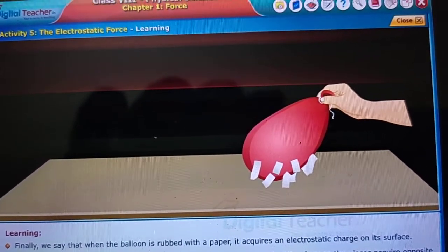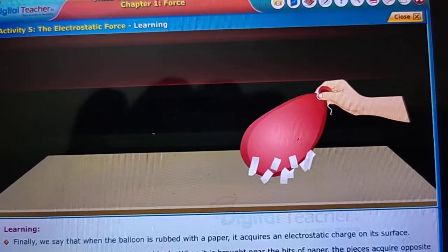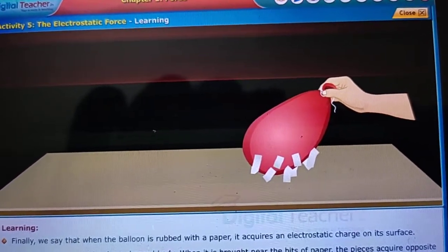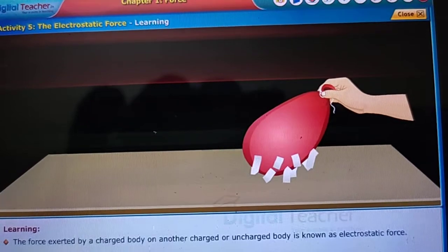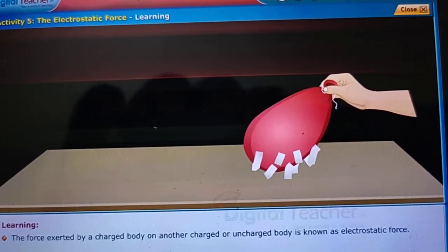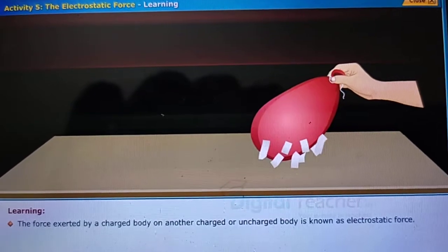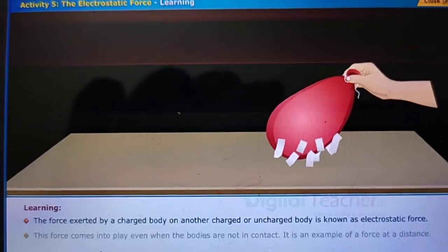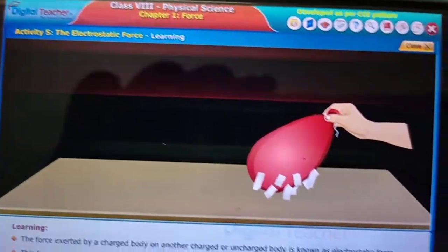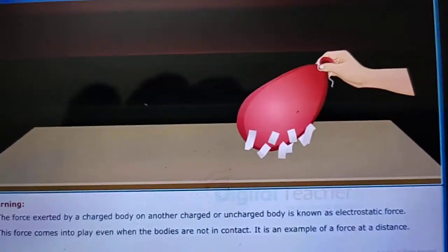The balloon is now said to be a charged body. When it is brought near the bits of paper, the pieces acquire opposite charge and will rise and cling to the balloon. The force exerted by a charged body on another charged or uncharged body is known as electrostatic force. This force comes into play even when the bodies are not in contact.